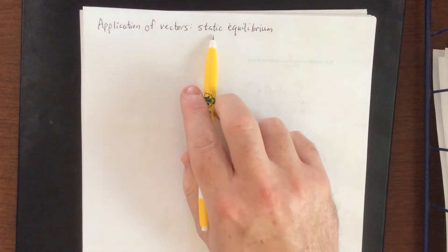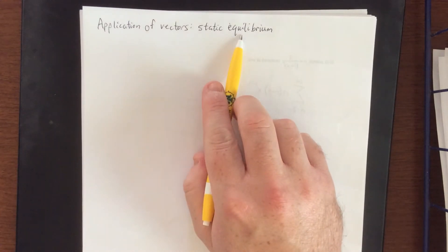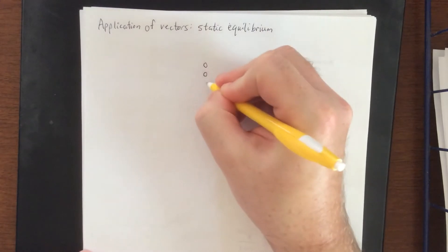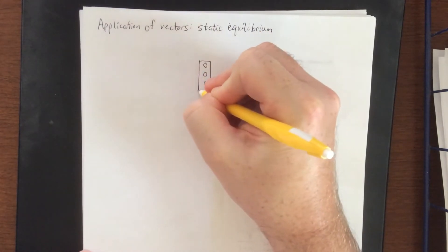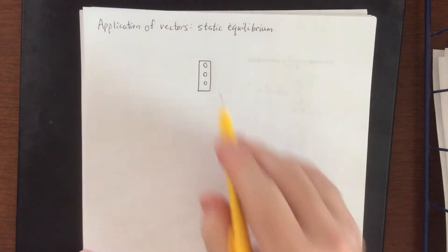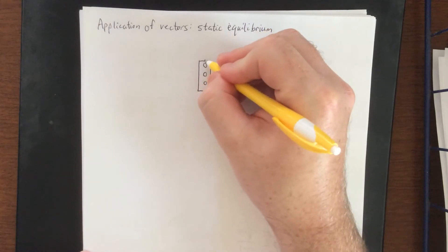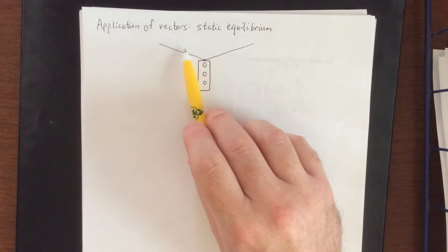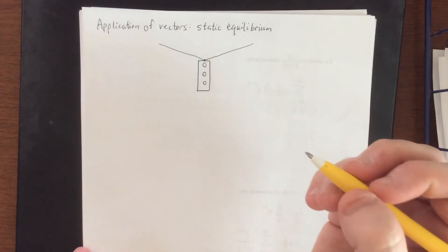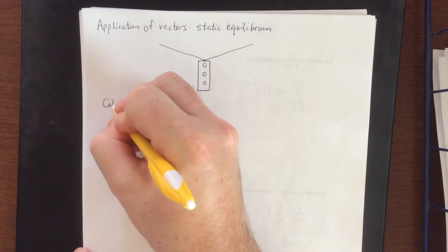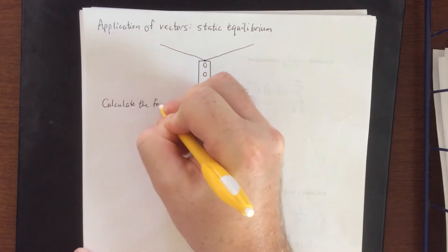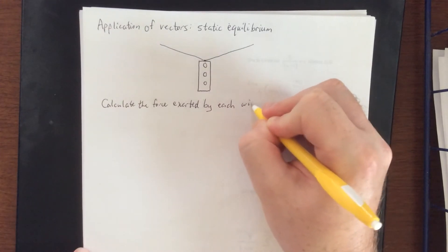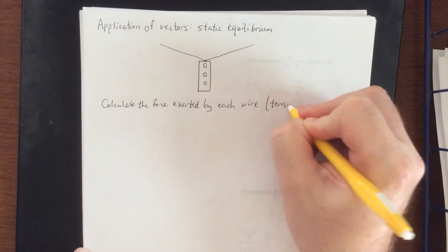Static is a word that means not moving, and equilibrium is a situation where everything is balanced out. An example of static equilibrium would be an object dangling between a couple of wires or chains or ropes — consider a traffic light, for example. A traffic light is usually suspended between two different wires, and the force created within these wires is referred to as tension.